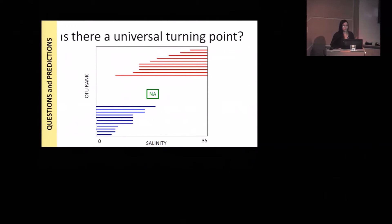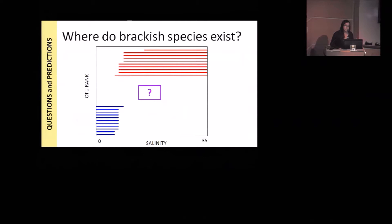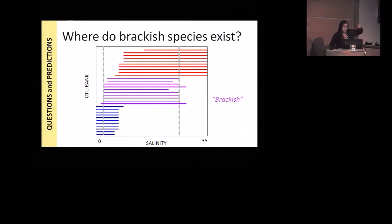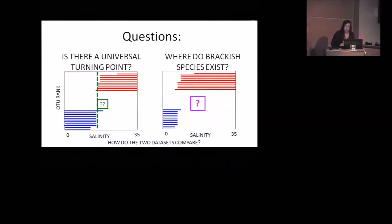Conversely, it's possible also that there is no universal turning point, that things turn over gradually along the entire gradient. In this case, you'd see something where the ends of all these bars are quite staggered and there's no vertical line that describes them well. The second question we wanted to ask was, how and where do brackish species exist? We know that there are things that live in brackish water, but it's not quite clear what their tolerance ranges are and where along the salinity gradient they tend to peak. It's possible that there is this community of brackish water specialists that just live in all brackish water, or perhaps they specialize in certain areas in low brackish water or in high brackish water.